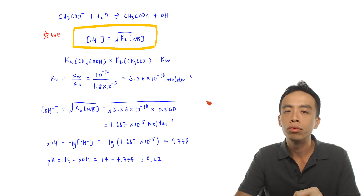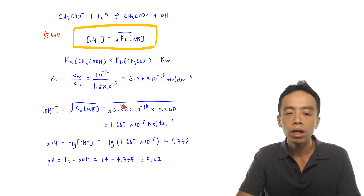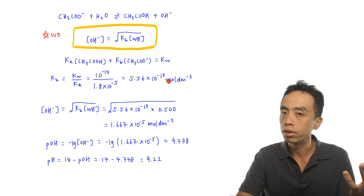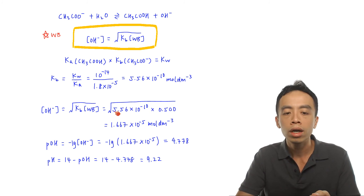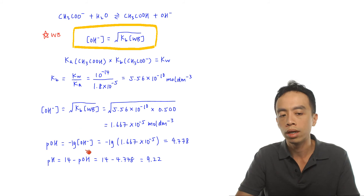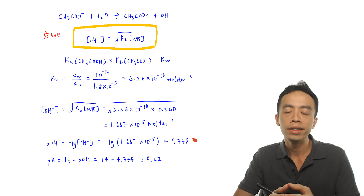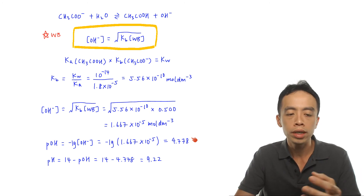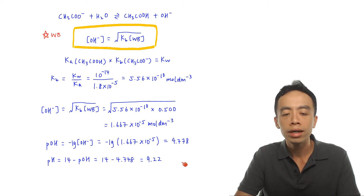Substituting into the formula: [OH⁻] = √(5.56×10⁻¹⁰ × 0.500) = 1.667×10⁻⁵ mol per dm³. Then pOH = −log(1.667×10⁻⁵) = 4.778. Finally, pH = 14 − pOH = 14 − 4.778 = 9.22 under standard conditions.